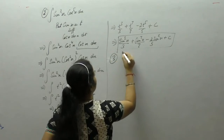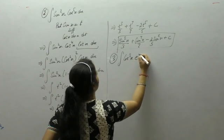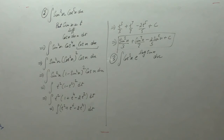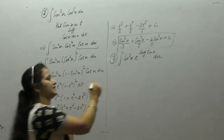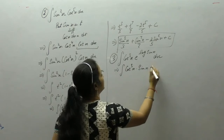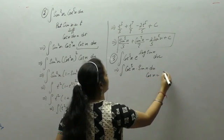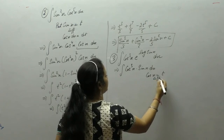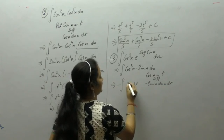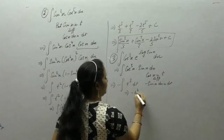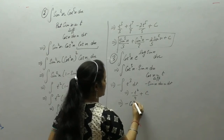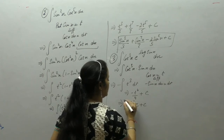Next is the integral of cos³x · e^(log sin x) dx. Since e and log cancel out, we get cos³x · sin x dx. Here m is odd, so we put cos x as t. The derivative of cos x is −sin x dx = dt. Substituting, we integrate −t³ dt, giving −t⁴/4 + c. Substituting back t = cos x, the answer is −cos⁴x/4 + c.